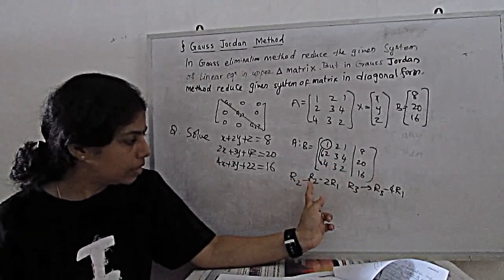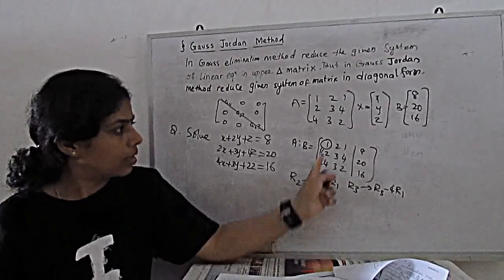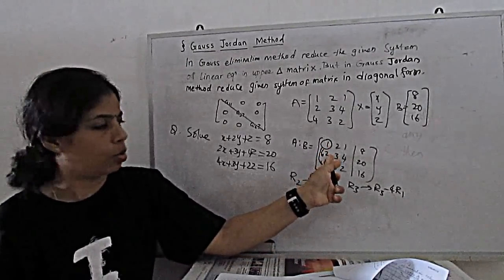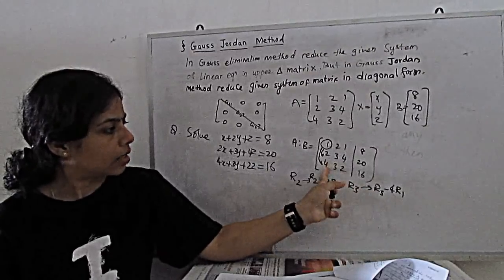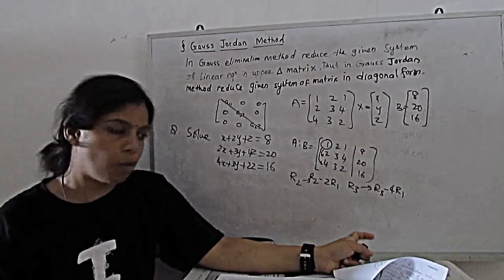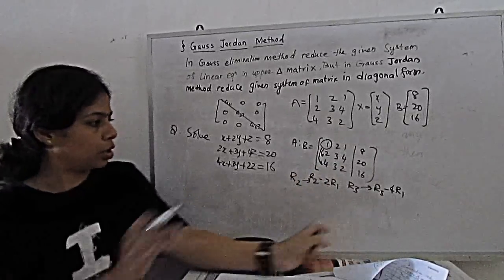R2 equals R2 minus, if we multiply R1 with 2, so R2 minus 2R1 becomes 0. For R3, R3 minus 4 of R1. Row 1 we multiply with 4 and minus, then it will become 0.